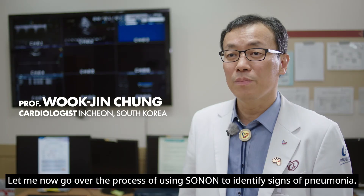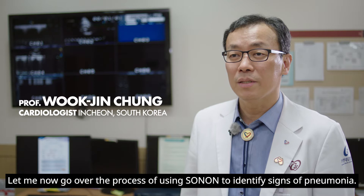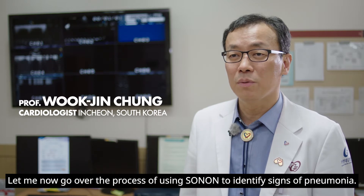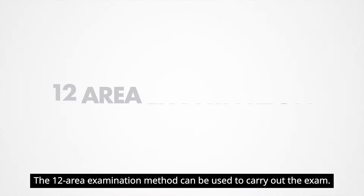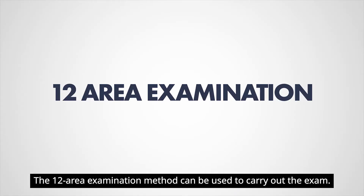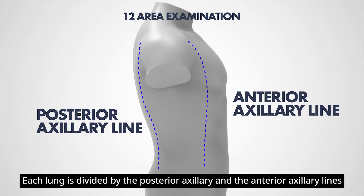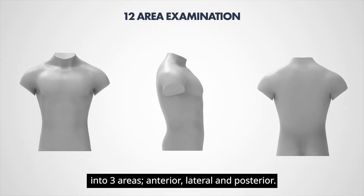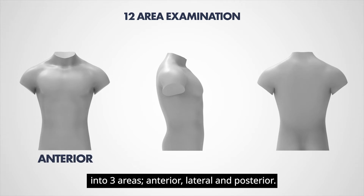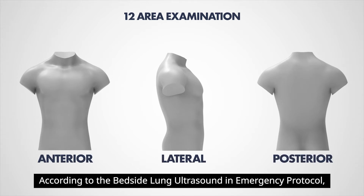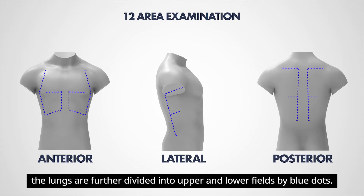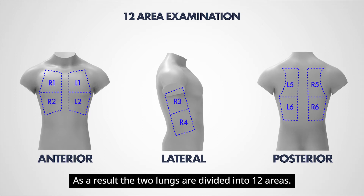Let me now go over the process of using Sonon to identify signs of pneumonia. The 12-area examination method can be used to carry out the exam. Each lung is divided by the posterior axillary and the anterior axillary lines into three areas: anterior, lateral, and posterior. According to the Bedside Lung Ultrasound and Emergency Protocol, the lungs are further divided into upper and lower fields by blue dots. As a result, the two lungs are divided into 12 areas.